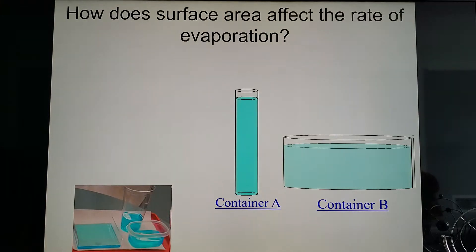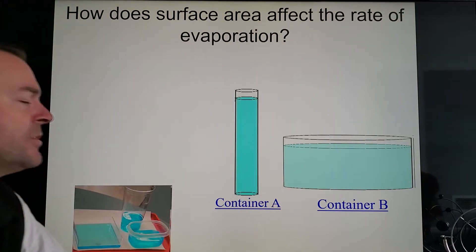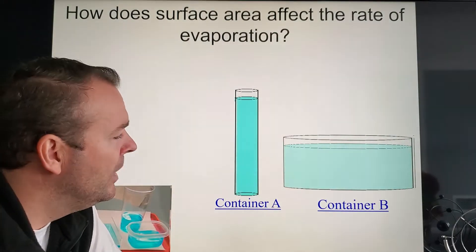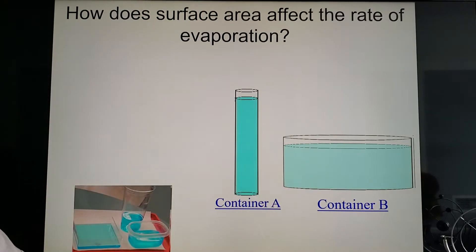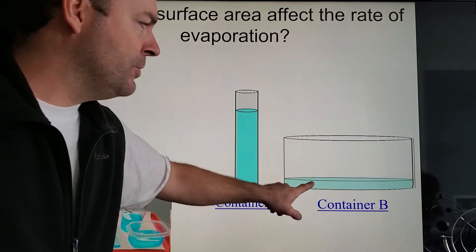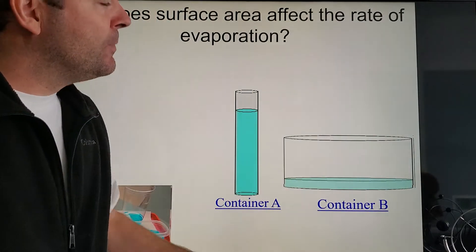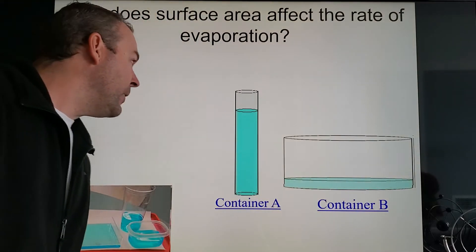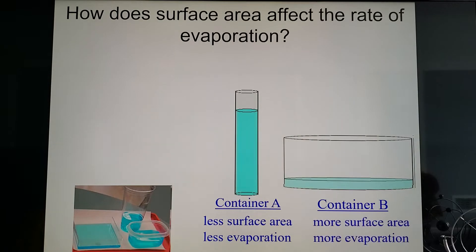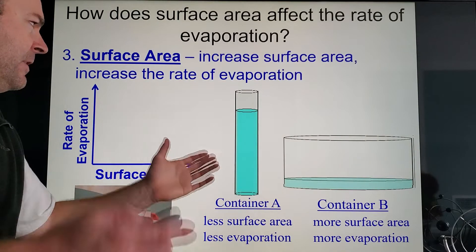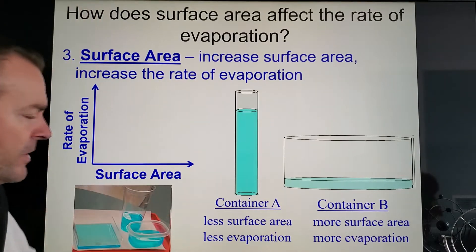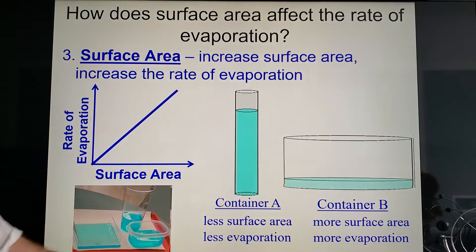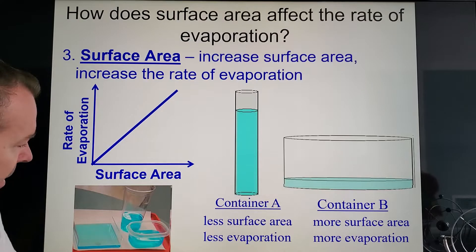Anyways, the third factor of evaporation rates is surface area. Which one of these containers has a greater surface area? Well, if you said container B you are correct. And the greater the surface area is, the faster the water will evaporate, right? More air hits it, it's more spread out, more sunlight can hit more of it and certainly speeds up the evaporation rate. So get it down there, surface area, the more of it that you have, the greater the evaporation rate. What does that graph look like? Well, if you said another direct relationship, you are correct.